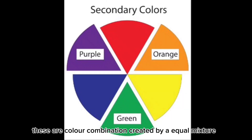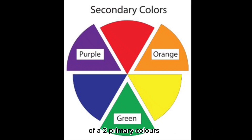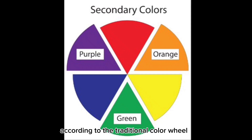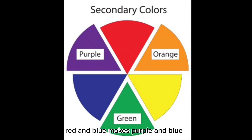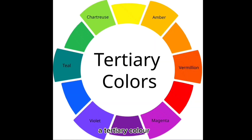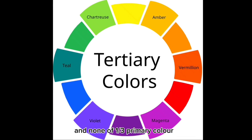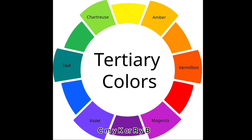Secondary colors are combinations created by mixing equal amounts of two primary colors. On the color wheel, secondary colors are located between primary colors. According to the traditional color wheel, red and yellow make orange, red and blue make purple, and blue and yellow make green. Tertiary or intermediate color is made by mixing full saturation of one primary color with half saturation of another primary color in a given color space such as RGB, CMYK, or RYG.